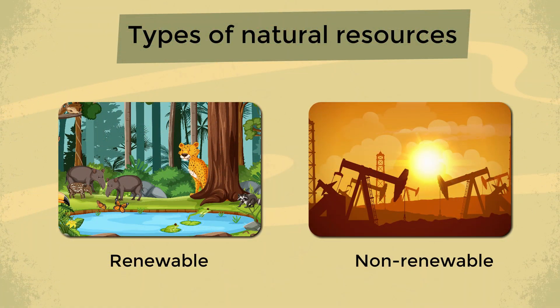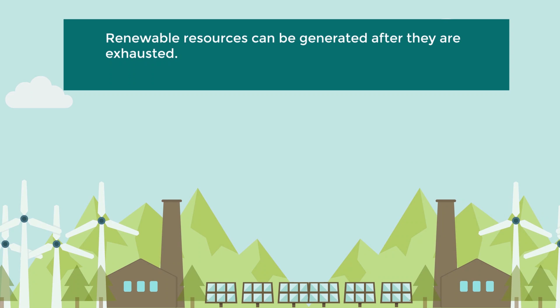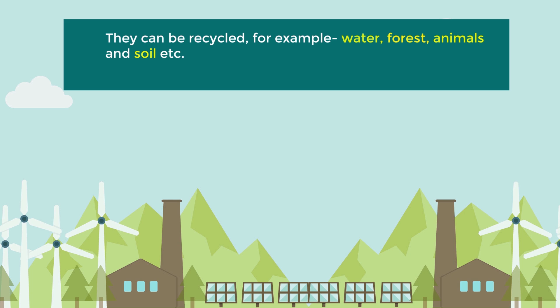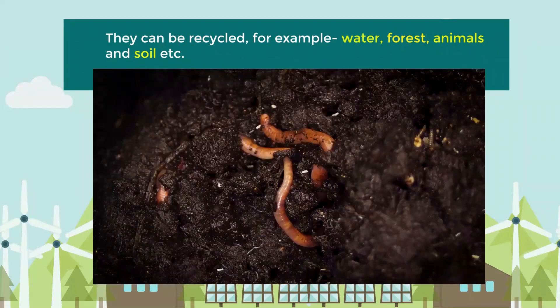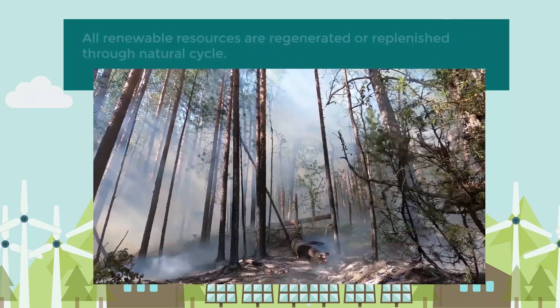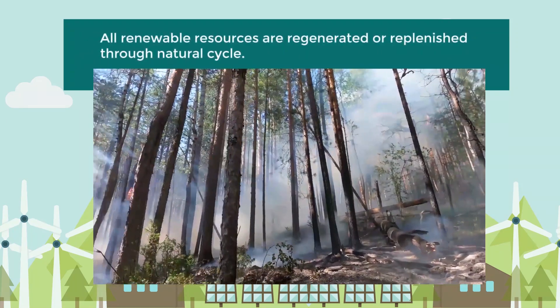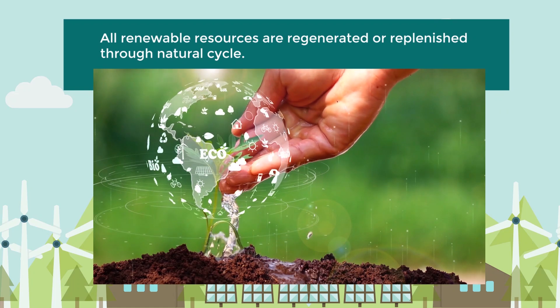Natural resources are of two types: renewable and non-renewable. Renewable resources can be generated after they are exhausted — they can be recycled. For example, water, forest, animals, and soil. All renewable resources are regenerated or replenished through the natural cycle.